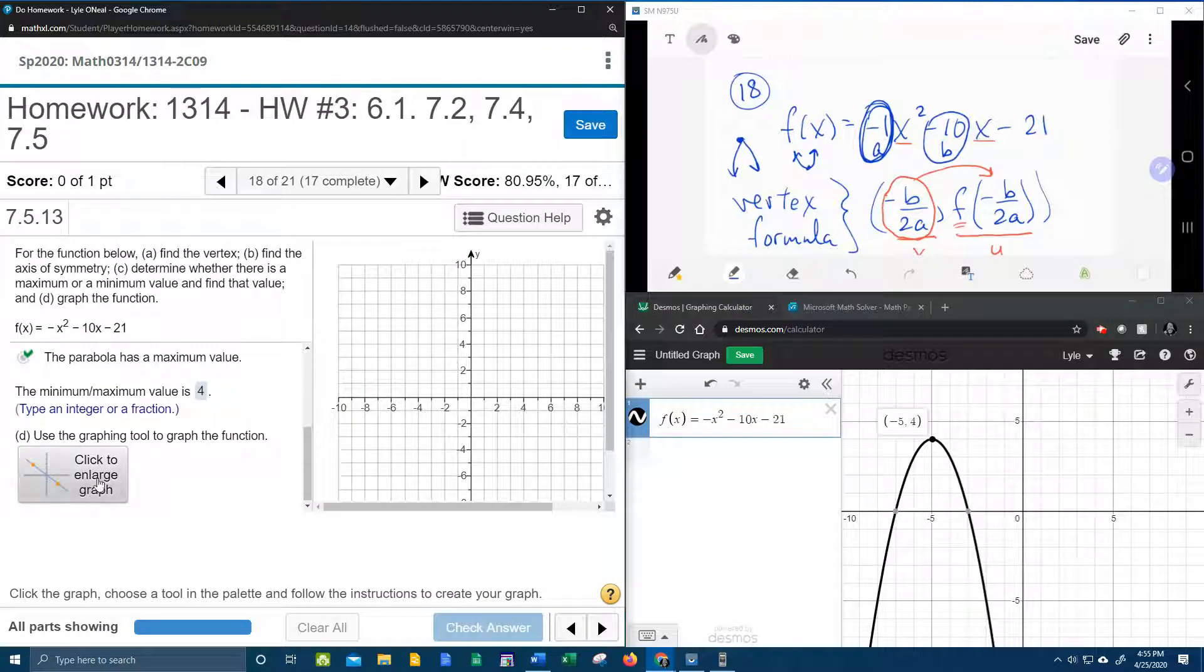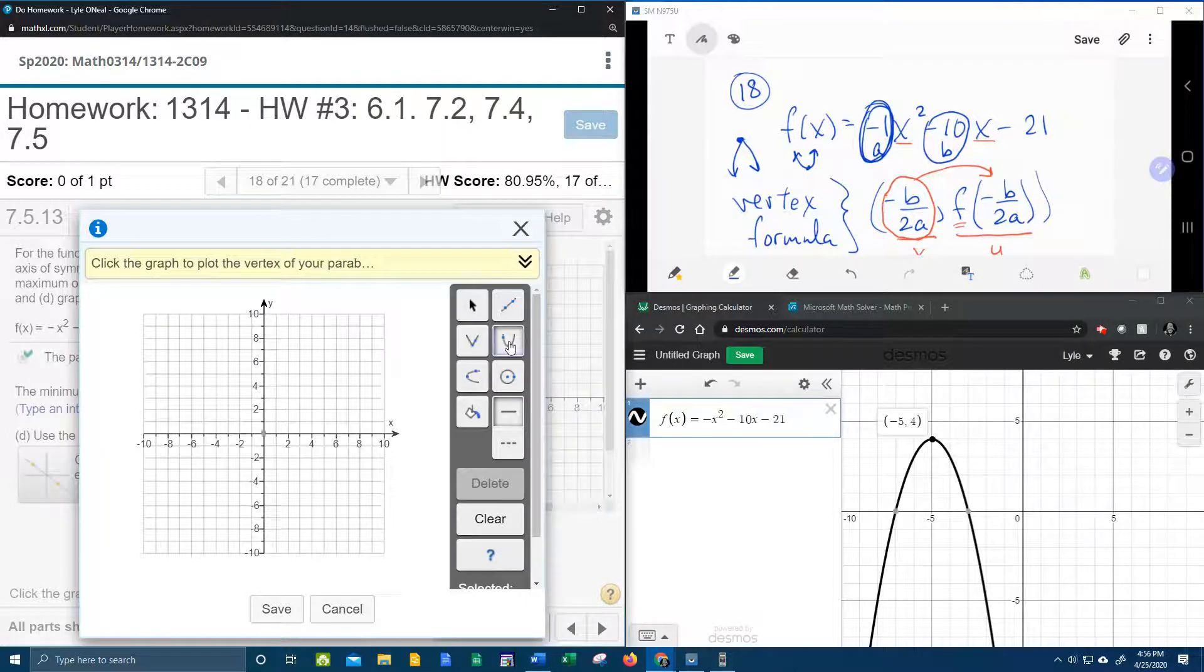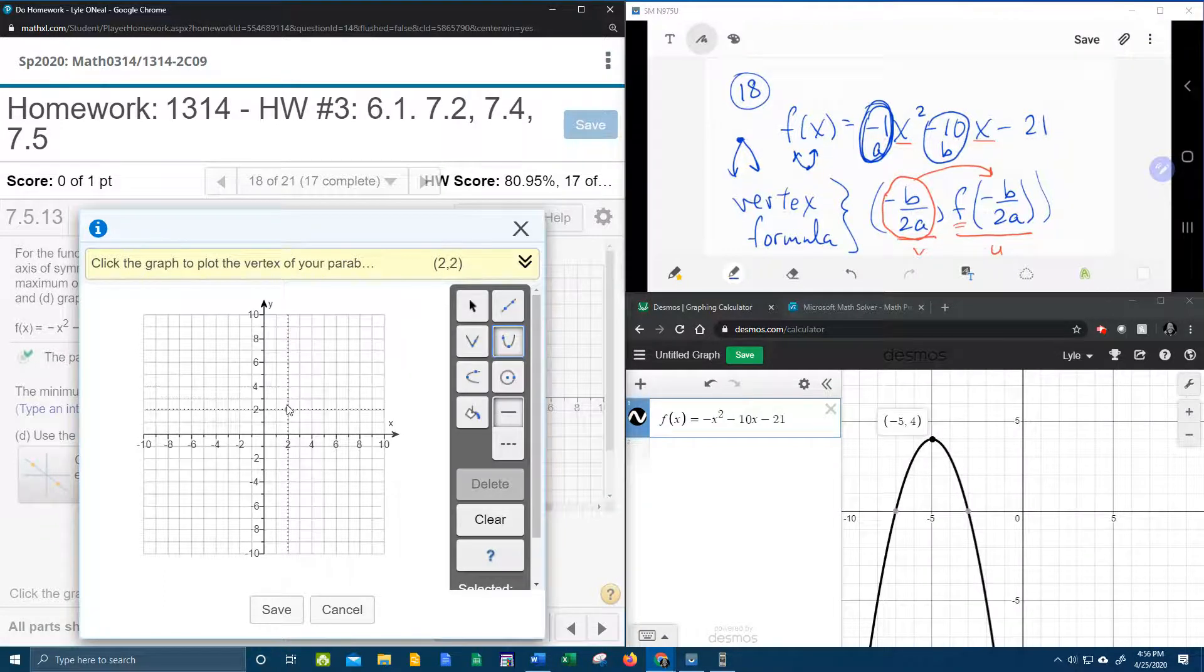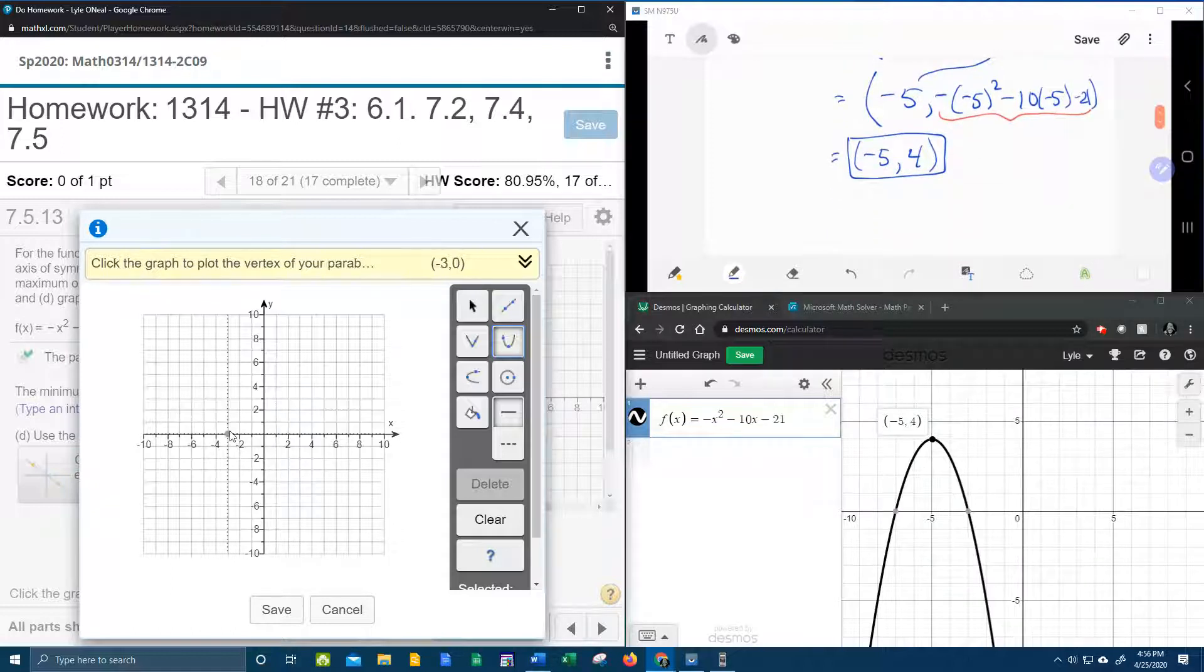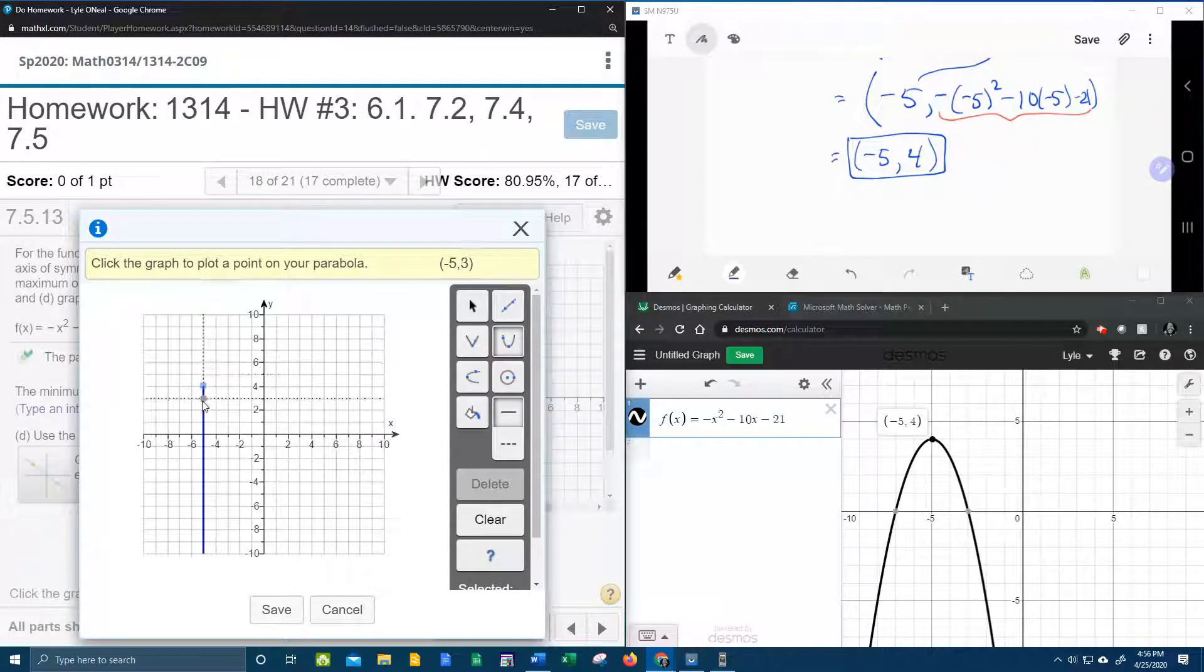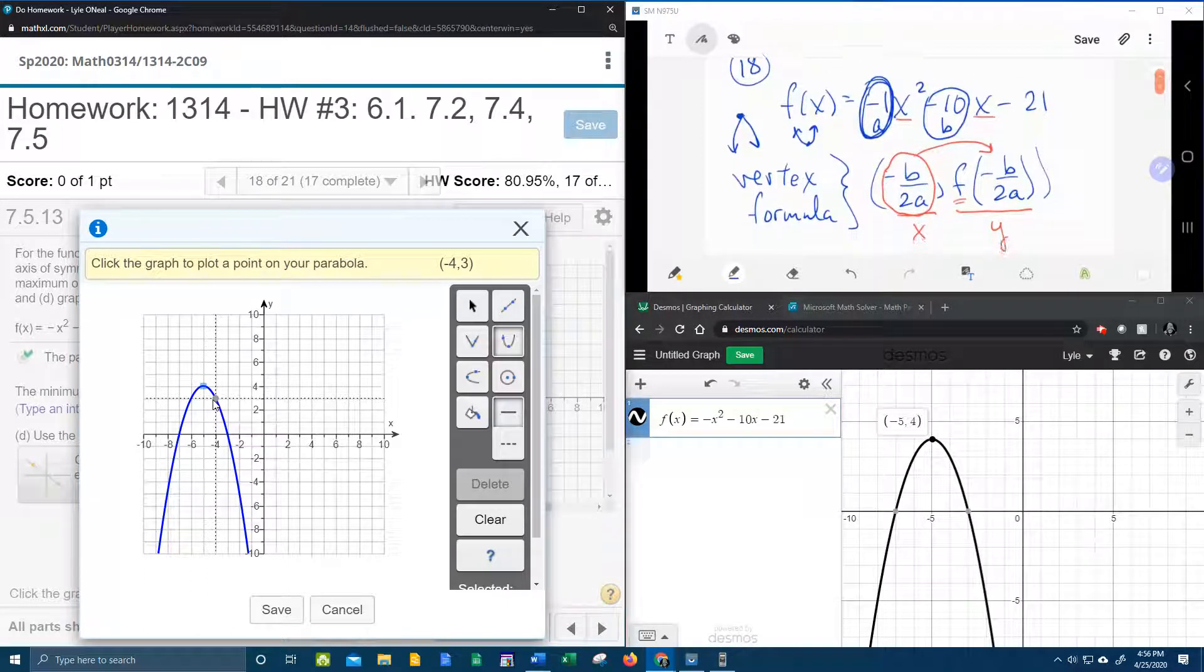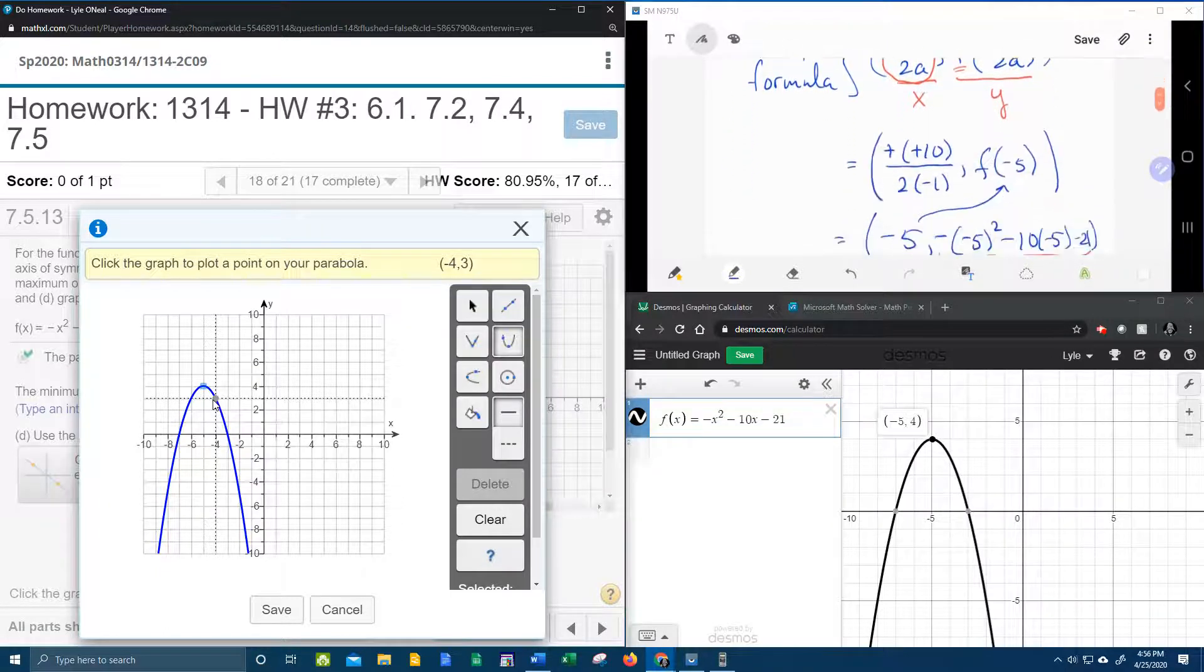And now it wants me to graph. So let's see here. I've got a parabola. Notice it says click the graph to plot the vertex, so it wants the vertex first. And what did we say the vertex was, negative 5, 4. Click the graph to plot a point on your parabola. Let's see. So I don't actually have another point on the parabola.